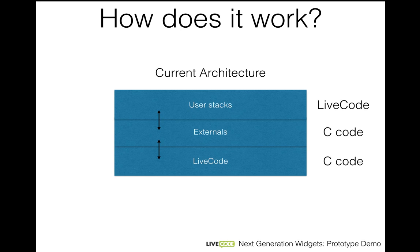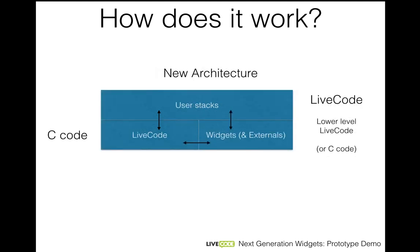How does this sit within the current architecture? At the moment we have the situation where user stacks live in LiveCode land and use the LiveCode code to operate. Below that we have externals, which communicate both with your stacks and with LiveCode itself, and those are written in C code. LiveCode itself is also written in C. What's going to change is that widgets and externals sit at the same level of the engine. So your widgets are going to be able to access all of the nicely, neatly modularized functionality we've been working on within the LiveCode engine directly, and they'll also be able to communicate with user stacks. Because they're on the same level as the engine itself, they're not in the message path — the message path sits up in the space where the user stacks are, so a mouse up message travels from button to card to stack, etc.